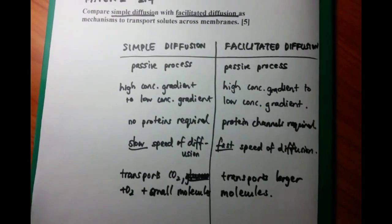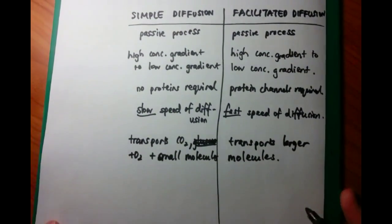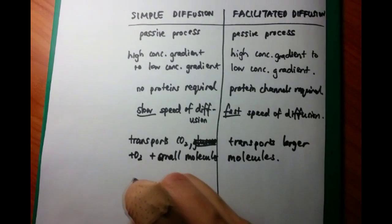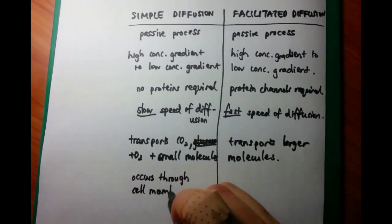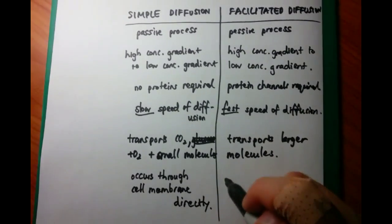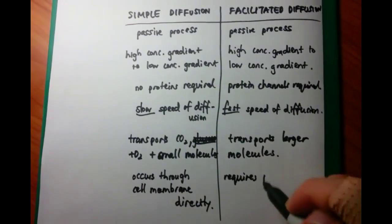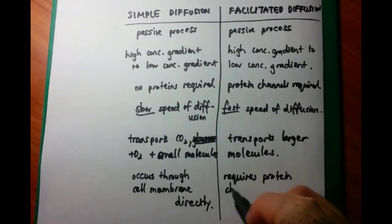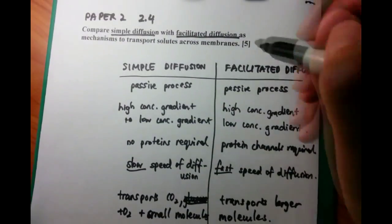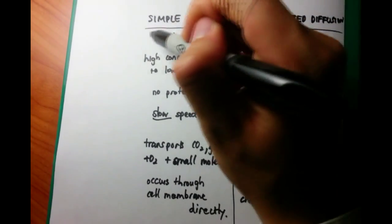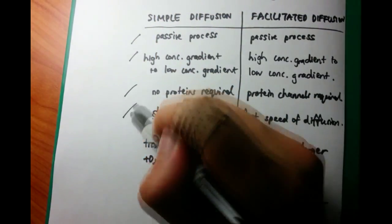The final thing that we can talk about is the fact that simple diffusion occurs through the cell membrane directly. So while I talked about how simple diffusion could be diffusion from one area to another, simple diffusion can also be across the membrane. However, it's directly through the membrane and very small substances which are non-polar in nature, whereas facilitated diffusion once again requires protein channels to occur.